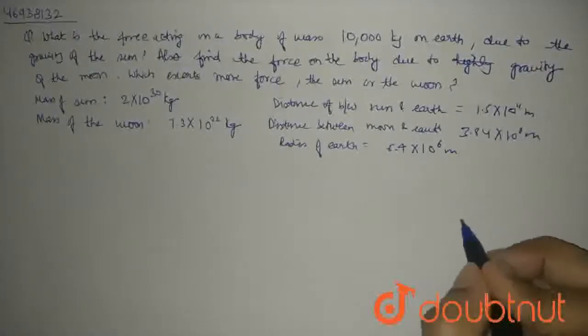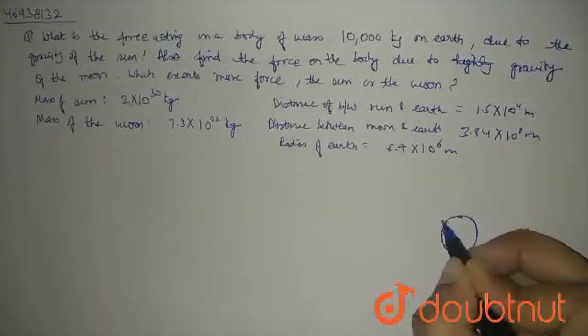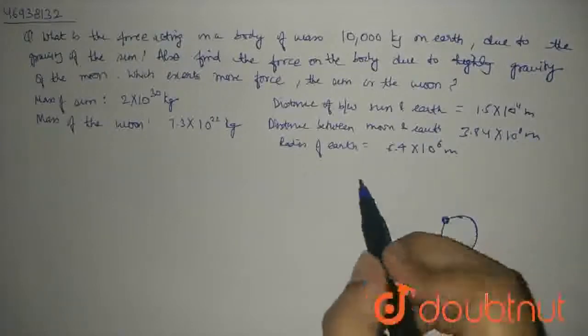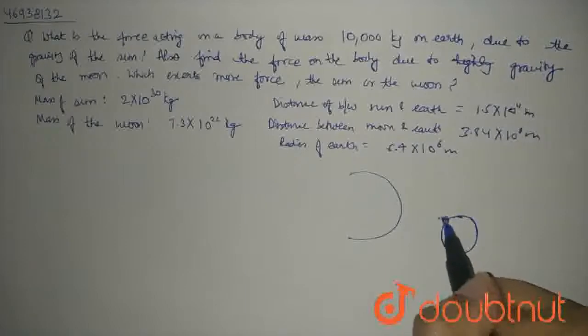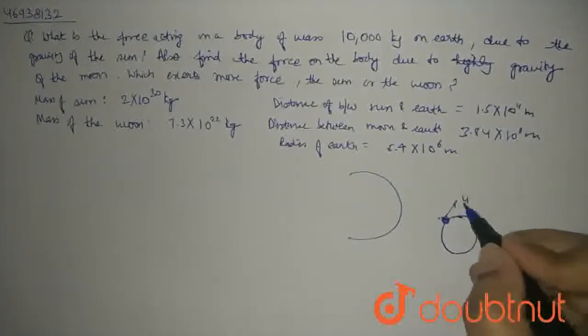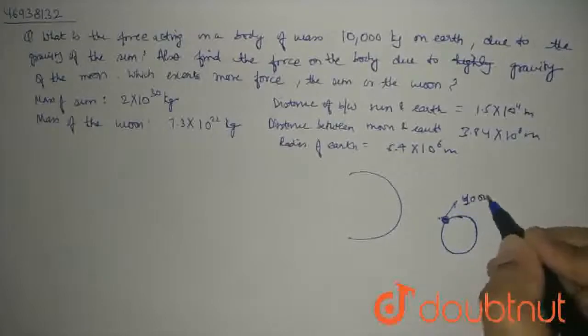If I consider Earth and I consider some object on it, we need to find the force from the sun. How much force will be put on this object? We have a mass of this object, that is, 10,000 kg.